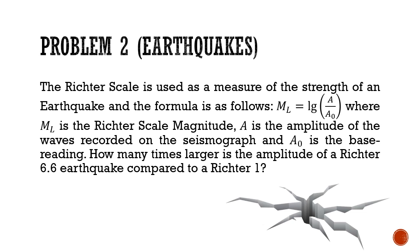Let's look at another problem in real life. Earthquakes. The Richter scale is used as a measure of the strength of an earthquake, and the formula is as follow. m subscript l is equals to log base a over a knot, where ml is the Richter scale magnitude, a is the amplitude of the waves recorded on the seismograph, and a knot is the base reading. So the question is, how many times larger is the amplitude of a Richter 6.6 earthquake compared to a Richter 1? Pause the video here and give this question a good try.